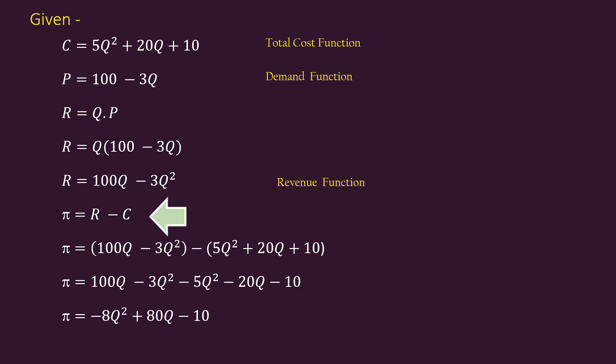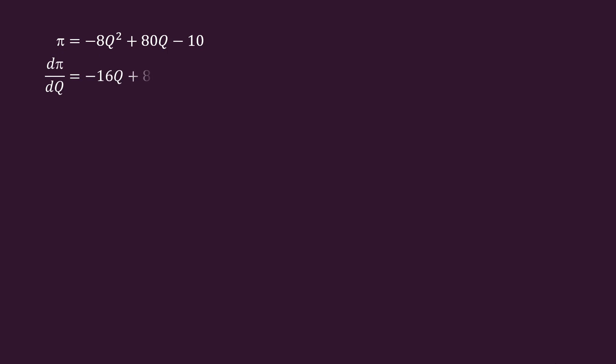The solution lies in finding the maxima of the profit function. We are going to find for what value of Q, that is output, the function, that is the profit, will be maximum. For this, find the first derivative. dπ/dQ equal to minus 16Q plus 80.